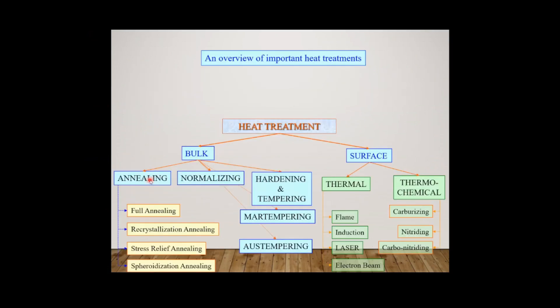Now we are going to see the different types of surface hardening. In the previous webinar we studied about bulk hardening types like annealing, normalizing, hardening, and tempering. But in this webinar we are going to see surface hardening. There are two types: one is thermal hardening and another one is thermochemical hardening. First of all we are going to see thermochemical hardening, then we will see thermal hardening.